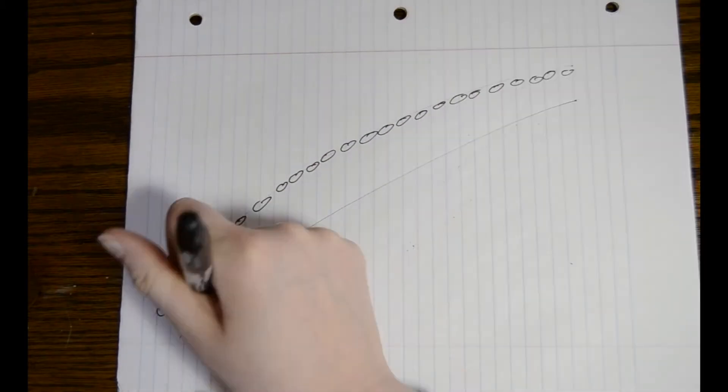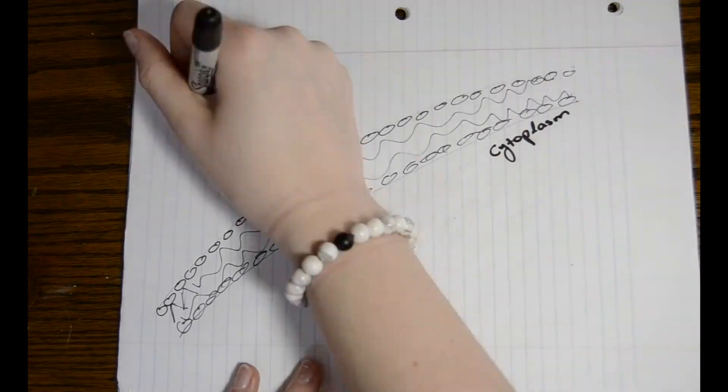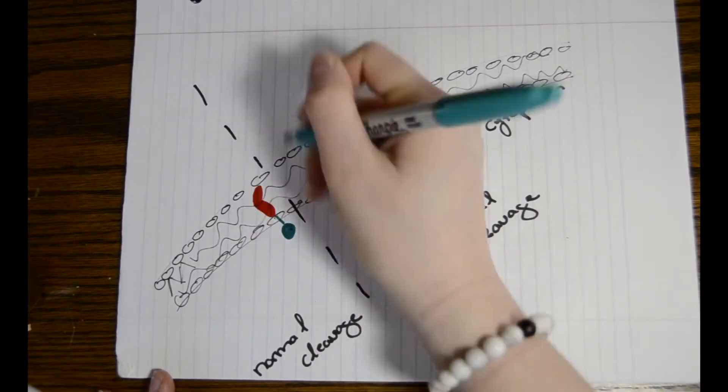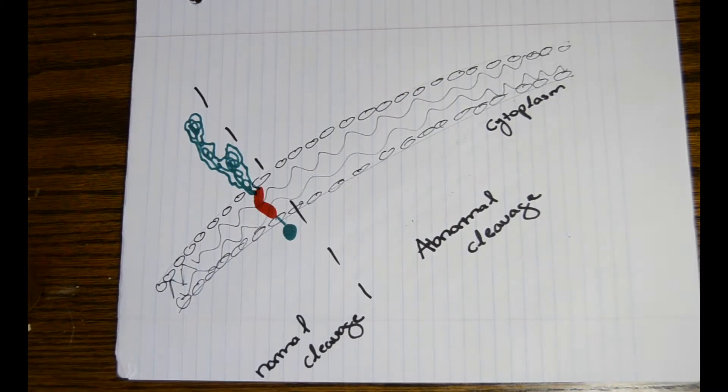Now, take the phospholipid bilayer membrane of a neuron. On the left-hand side, we will be seeing the normal cleavage of APP, and on the right, we will see how amyloid beta peptide is able to cause plaques when there is an abnormal cleavage of APP.